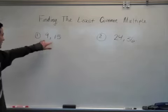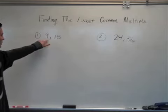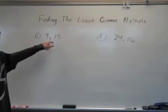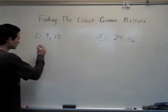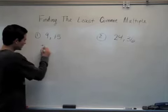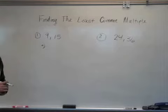The first problem we have is finding the least common multiple of 9 and 15. Step A is to write the prime factors of 9 and 15.